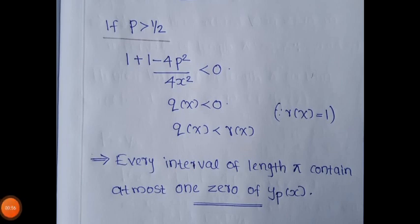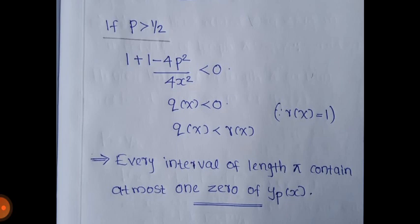If p > 1/2, then 1 + (1 − 4p²)/(4x²) < 1, so q(x) < r(x). By a related theorem, if q(x) < 0 and u(x) is a non-trivial solution of u'' + q(x)u = 0, then u(x) has at most one zero. Hence every interval of length π contains at most one zero of y_p(x). This completes the theorem. Thank you.